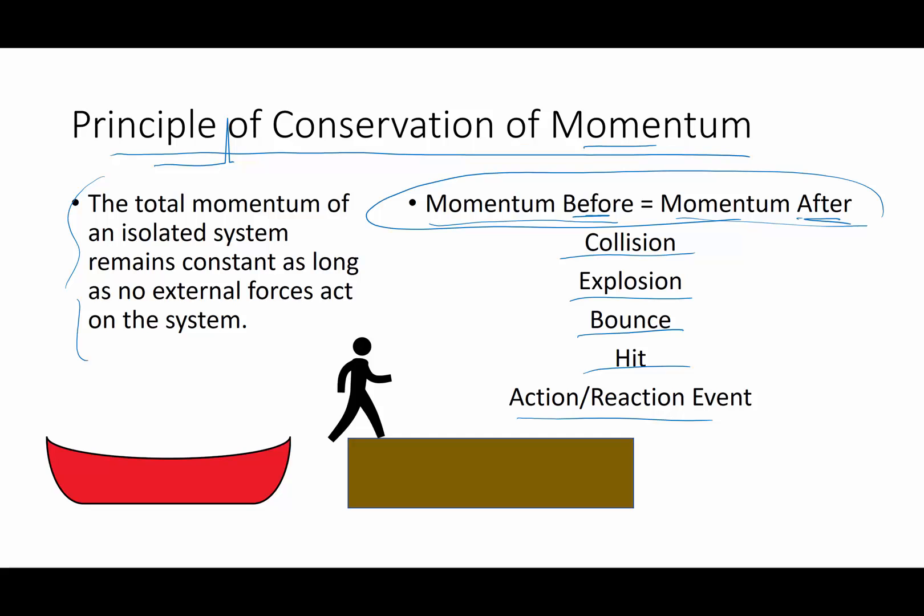Before I have a canoeist sitting happily in the canoe having a fabulous day, and when the person is just sitting in the boat their total momentum is zero. Now when the person steps out of the boat, there is the mass of the person times velocity of the person in this direction, and they're going to push off from that canoe a little bit. That's going to equal the mass of the canoe times velocity of the canoe in the other direction. Momentum one way is going to be equal to momentum the other way. This is an example of an action-reaction event.